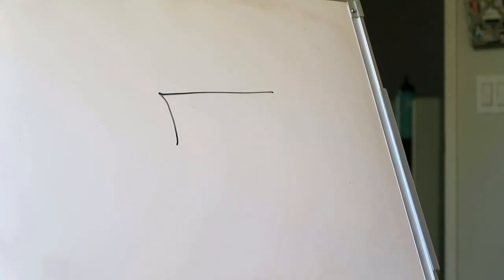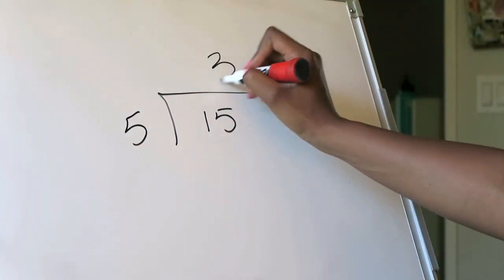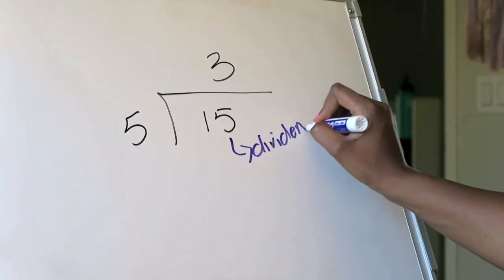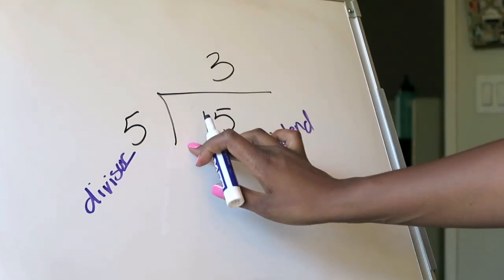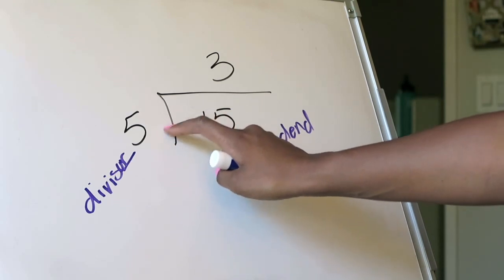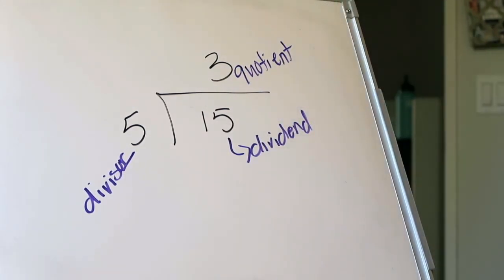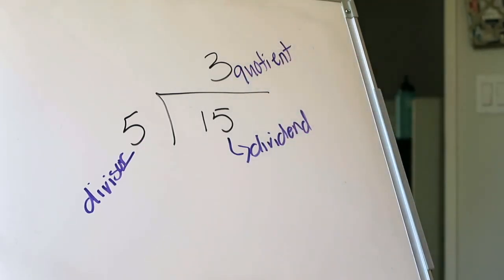Sometimes you'll see a division problem written differently using what is called a division house. The dividend goes inside the division house, the divisor goes outside, and the quotient goes on top. I used to tell my fifth graders: think of the divisor as the worker knocking on the door saying, 'let me in, I have work to do.' For the second example, 15 divided by 5 equals 3, so 3 is your quotient. That's how you read a division problem.